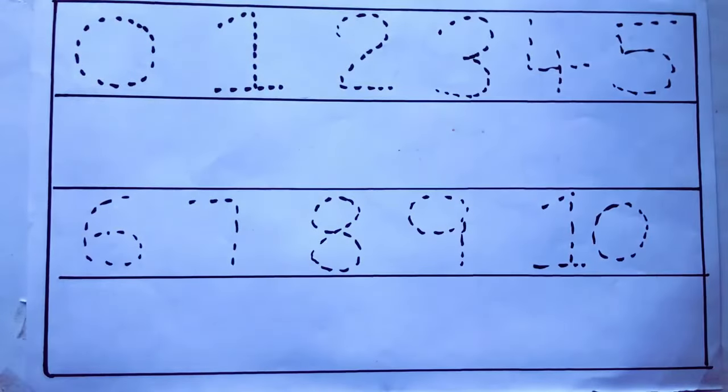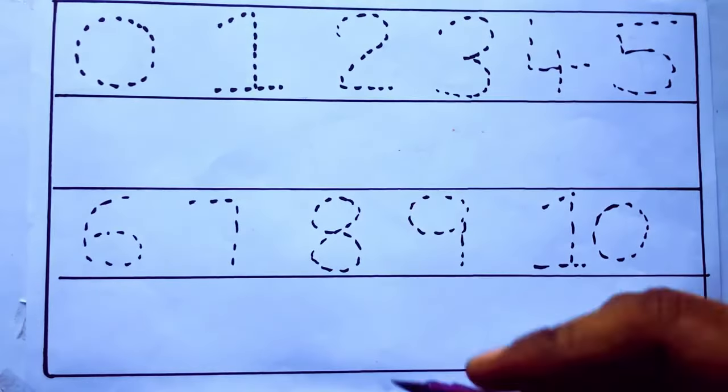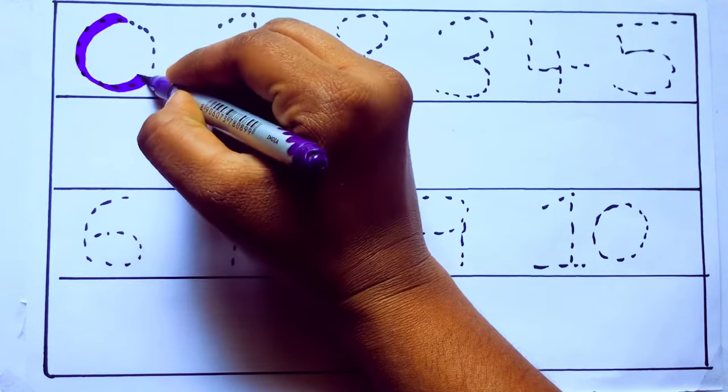Let's draw numbers. Violet color 0, Z-E-R-O.